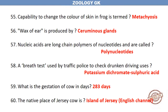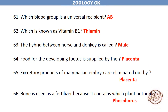A breath test used by traffic police to check drunken driving uses potassium dichromate and sulfuric acid. What is the gestation period of a cow in days? 283 days. The native place of Jersey cow is the Island of Jersey in the English Channel. Which blood group is a universal recipient? AB. Which is known as Vitamin B1? Thiamine.